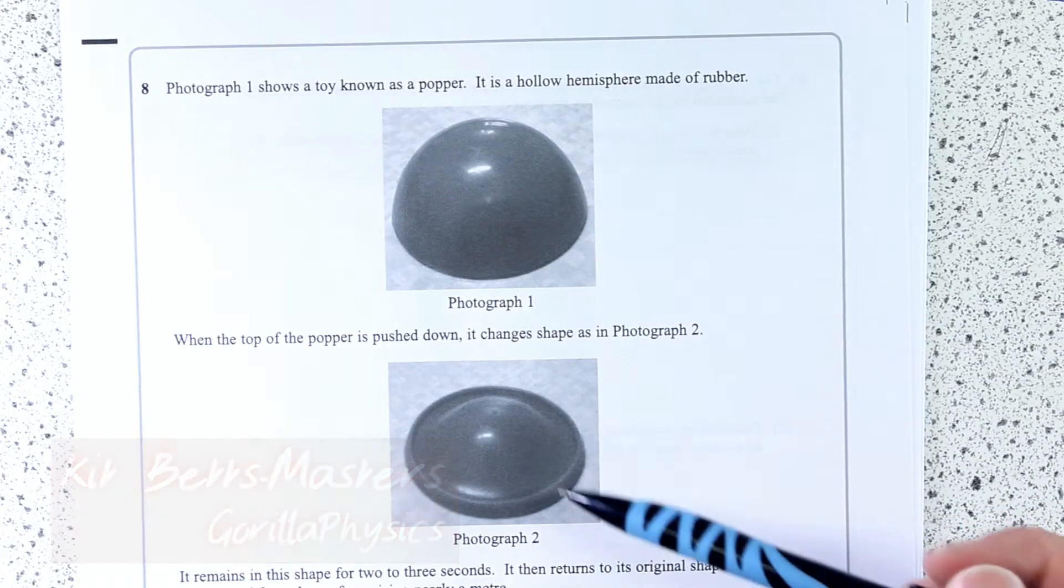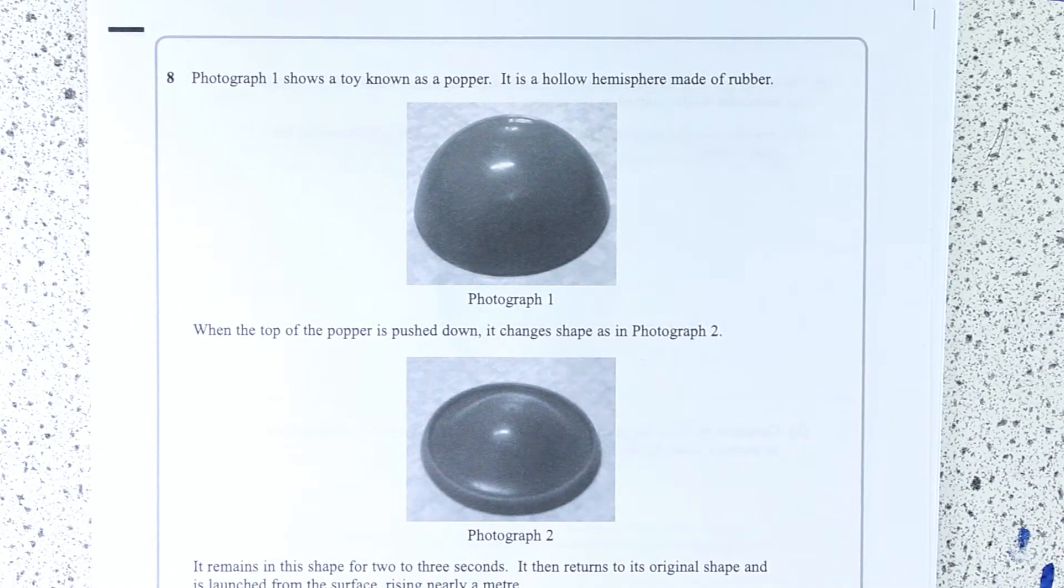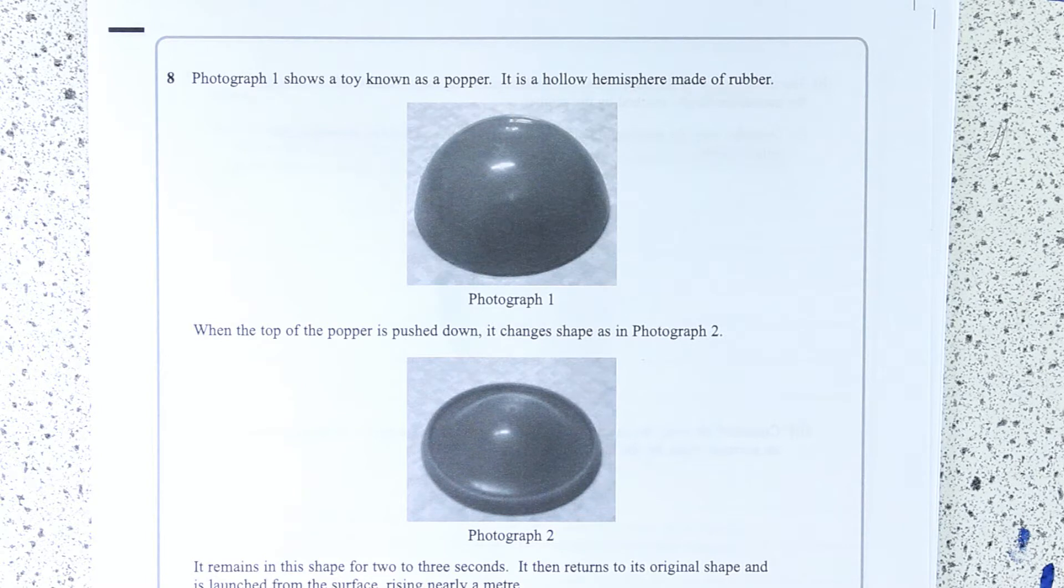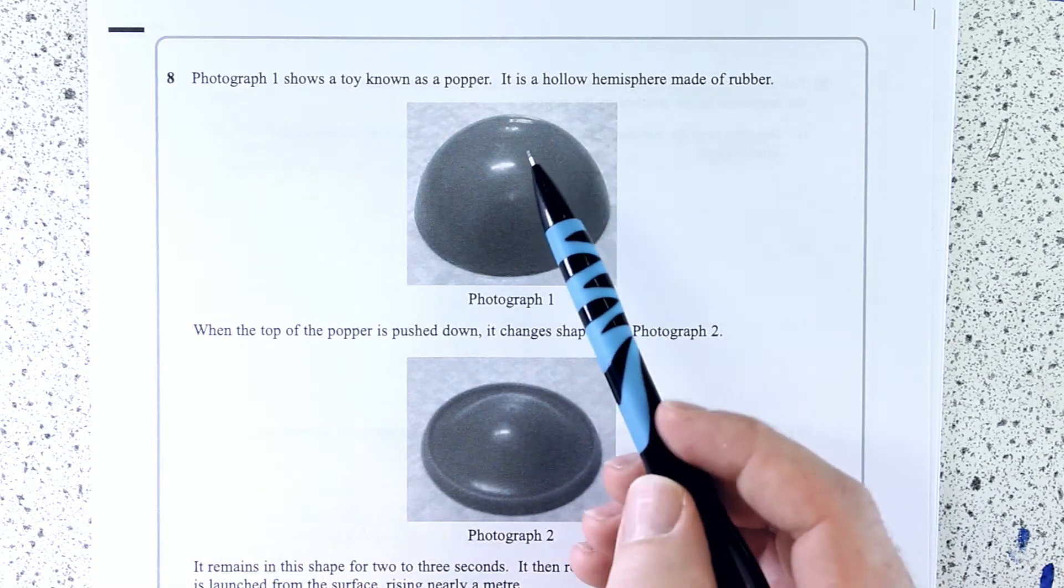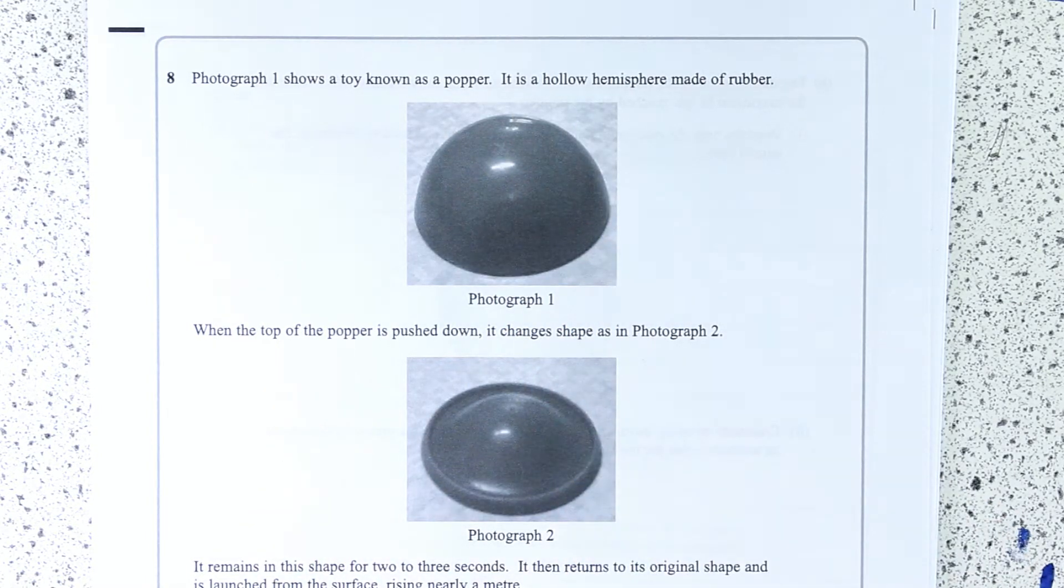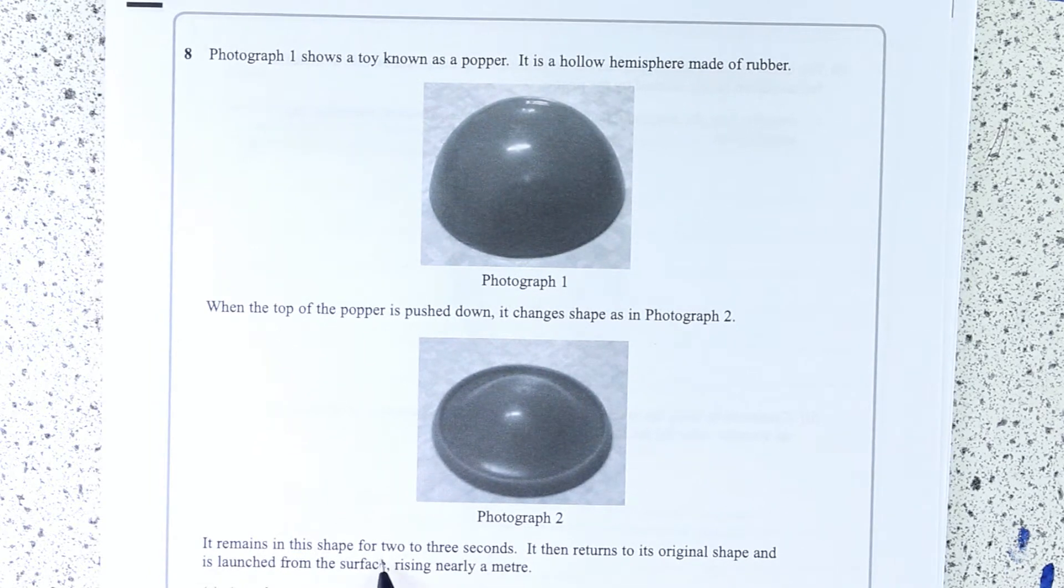So hopefully you'll see this and you'll think straight away conservation of energy. That's not where it starts with this question, but that idea of conservation of energy can come back a little bit later on. Essentially, press the popper in and we store some elastic potential energy in it. That is then transferred into kinetic energy when it leaps up off the surface.